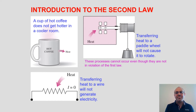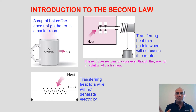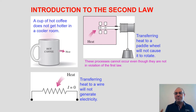The second law talks about the direction of transfer of energy — heat or work. If you look at a cup of hot coffee on the left side of this slide, and you put it on the table, heat will always transfer from the coffee to the surroundings. It cannot happen in the opposite direction — heat always transfers from high temperature to low temperature.